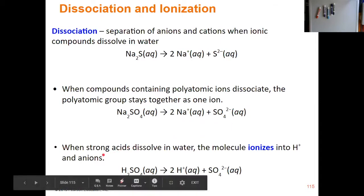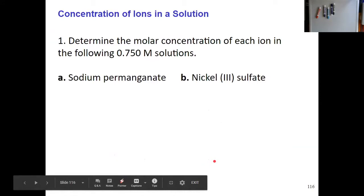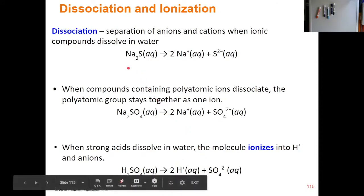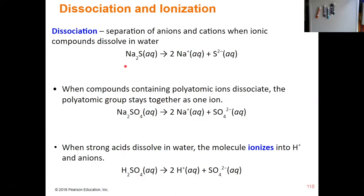The same thing happens when a strong acid dissolves in water. H2SO4 dissociates into two hydrogen ions and one sulfate ion. Something else to consider when you're looking at this dissociation is number-wise: if I have one Na2S and I dissolve that, it will dissociate into two sodium ions and one sulfide ion. So one formula unit gives me two of these and one of these. Concentration-wise: if I have one mole of Na2S and dissolve it, I have two moles of sodium ions and one mole of sulfide ions.